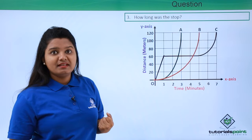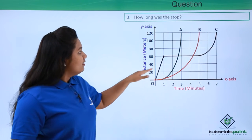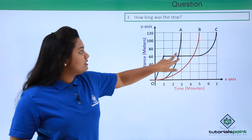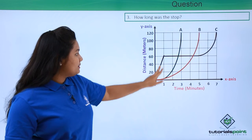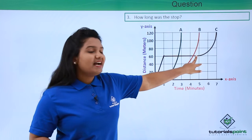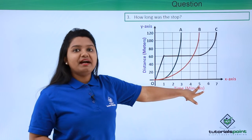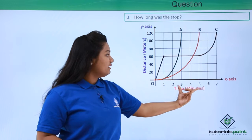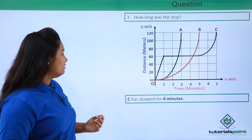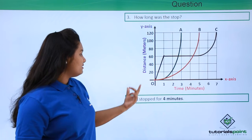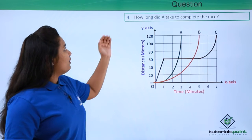Now how long was the stop? We can also calculate that from the graph. Let's see how it is done. We see that from this point to this point, the runner C has stopped. At this point the time was one minute, and when it started resuming again the time was five minutes. So the time duration would be five minus one, which is four minutes. So runner C has stopped for four minutes.